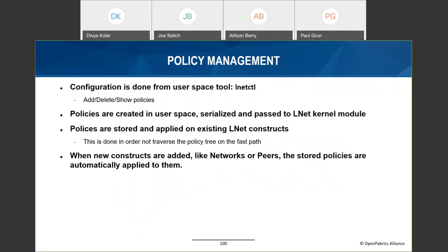Adding, deleting, and showing network selection policies is done through the lnet control utility. Policies are serialized and sent to the LNet kernel module where they are applied on existing constructs. The idea is not to look up rules on the fast path; instead the rules are programmed into LNet's data structures so the selection algorithm can make decisions without a policy lookup. When a rule is added or deleted it is processed on the slow path and the LNet data structures are updated accordingly. When new peers or interfaces are added on demand, the stored policies are traversed and applied on the new data structures.